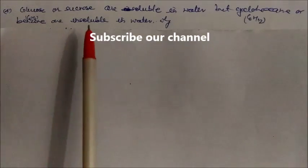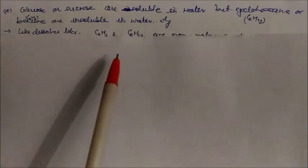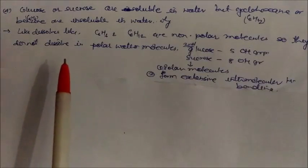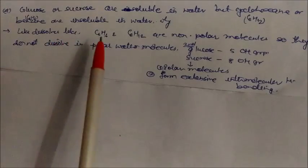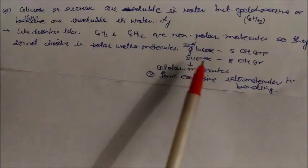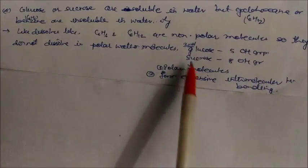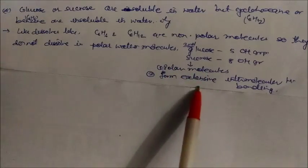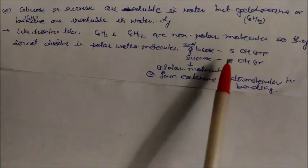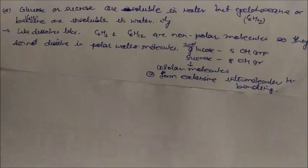Glucose and sucrose are soluble in water, but cyclohexane, CS₂, and benzene are both insoluble in water — why? We know that 'like dissolves like.' Benzene and cyclohexane are non-polar molecules, so they do not dissolve in water, which is polar. Glucose contains five hydroxyl groups and sucrose contains eight hydroxyl groups; these polar molecules form extensive intermolecular hydrogen bonding with water, so they dissolve.